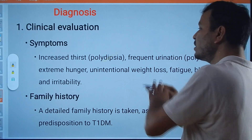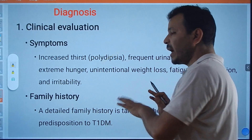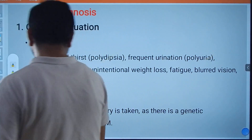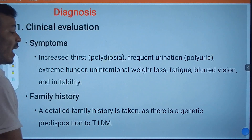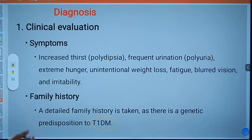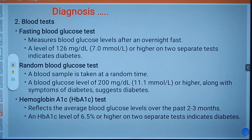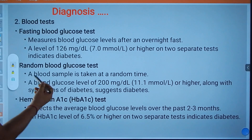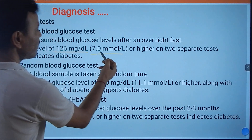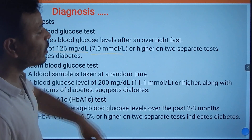Unintentional weight loss, fatigue, and blurred vision can also be used in clinical diagnosis. A detailed family history is taken, as there is a genetic predisposition to Type 1 Diabetes Mellitus, so it may come from the family. Further diagnosis is done by performing a fasting blood glucose test, which measures blood glucose level after an overnight fast.